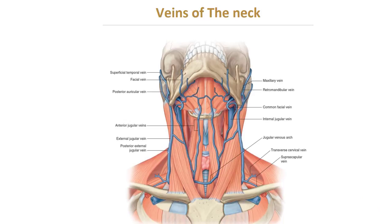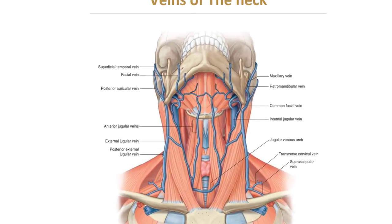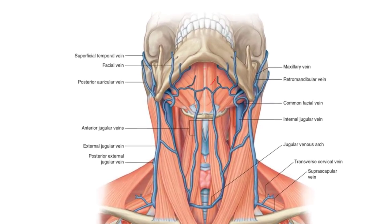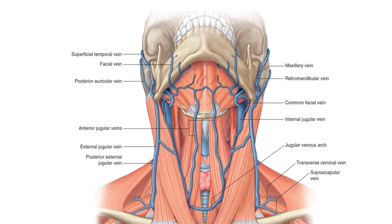The anterior jugular vein starts in the submental triangle, one on each side of the median plane, connected with the other side by the jugular arch.